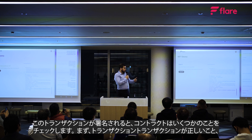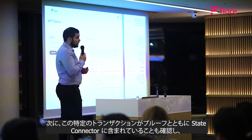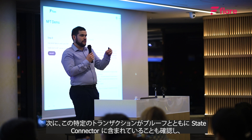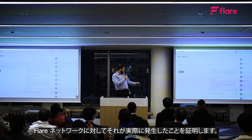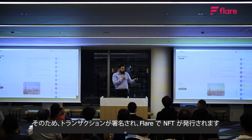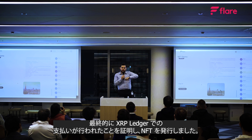Once this transaction is signed, the contract checks that the transaction was correct — the amount was correct, the receiver's address was correct, and the memo field was correct. It also checks that this specific transaction together with the proof was included in the State Connector and therefore attested to the Flare network that it really happened. The transaction is signed and an NFT is minted on Flare. To recap: we reserved an NFT on Flare, paid for it on the XRP Ledger, and proved that payment was made, thus minting the NFT.